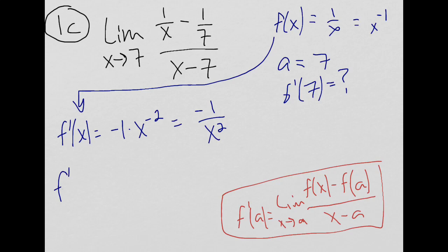f prime of 7, negative 1 over 7 squared, which is negative 1 over 49. And that's my answer.